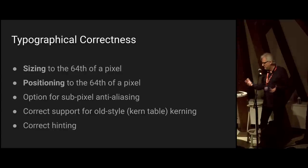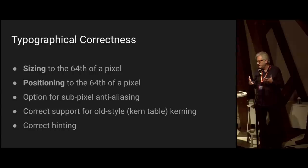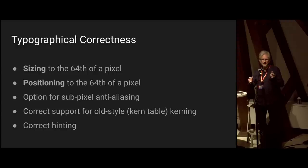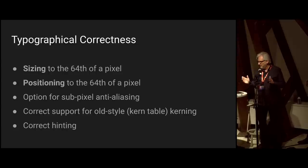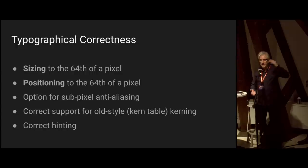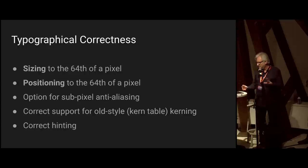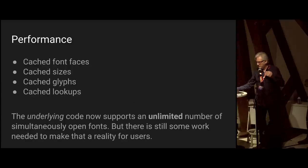We're now sizing to the 64th of a pixel and positioning as close as we can to the 64th of a pixel. I added sub-pixel anti-aliasing so we now render individual glyphs on quarter pixels, getting letters as close as possible to where they're supposed to be. Importantly, if we make a font twice the size it's twice as long — really important in a scalable interface, otherwise things move all over the place.